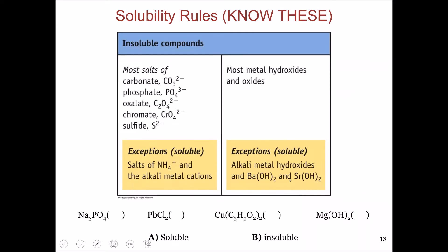The second set of rules is for insoluble compounds. Carbonates, phosphates, oxalates, chromates, and sulfides are always insoluble except if combined with ammonium or group 1 cations, which are always soluble. Also, hydroxides and oxides are always insoluble except if combined with group 1 cations or barium and strontium, in which case they become soluble.